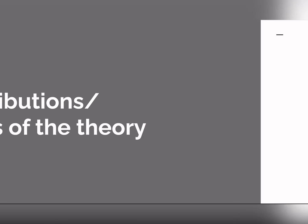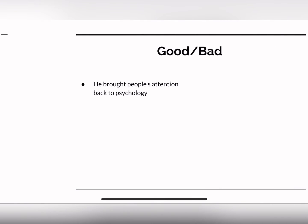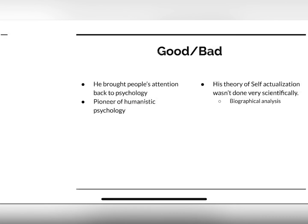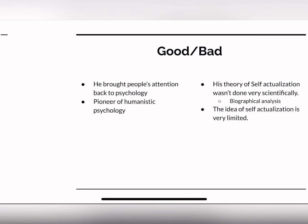There were a lot of contributions and limits to this theory. On the positive side, Maslow brought attention back to psychology and was one of the pioneers of humanistic psychology. Some criticisms were that his theory of self-actualization wasn't done very scientifically — he seemed to pick and choose people he thought had achieved self-actualization, doing some of this through biographical analysis where he read biographies and picked out qualities, which is not a very scientific method. The idea of self-actualization is also very limited; Maslow believed only about 2% of people actually achieved it.